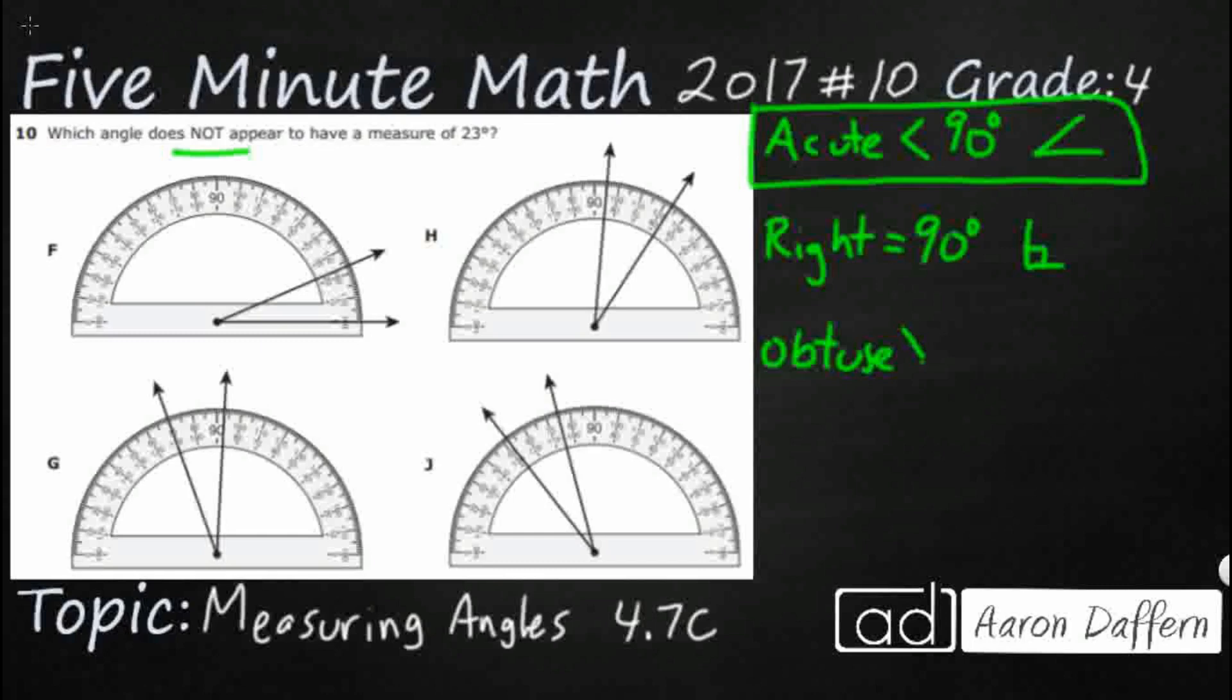If we ever get an obtuse angle, now that's going to be larger than 90, so that's going to be like a big, huge angle, something like that.